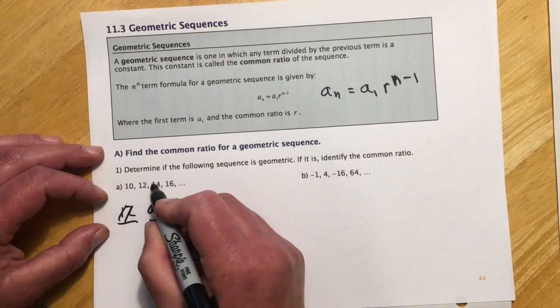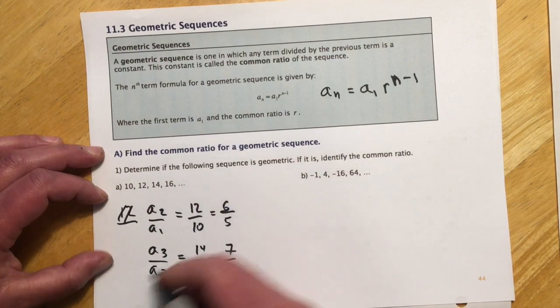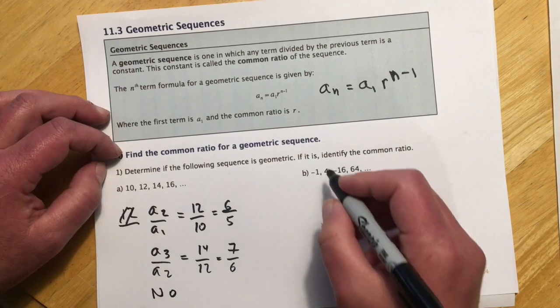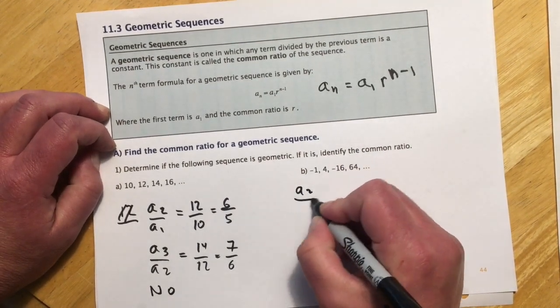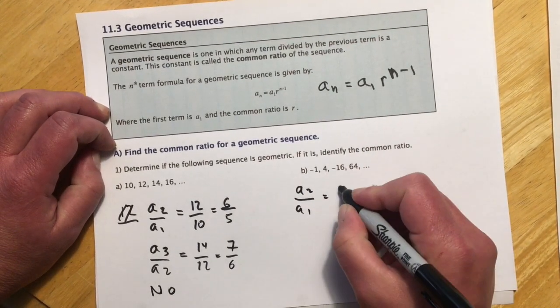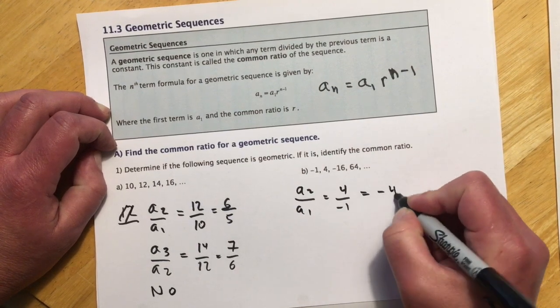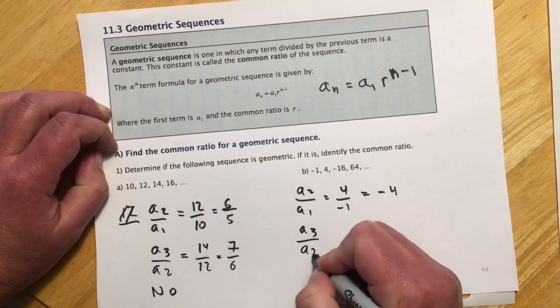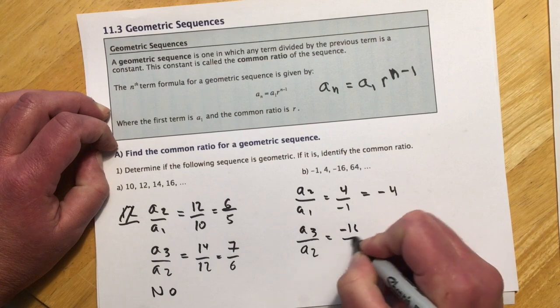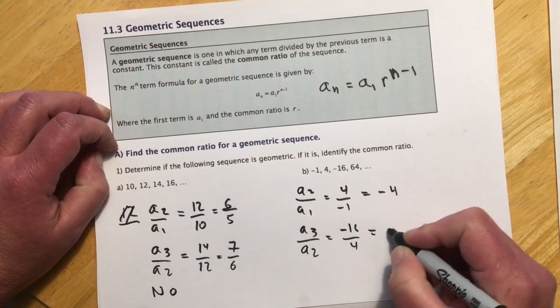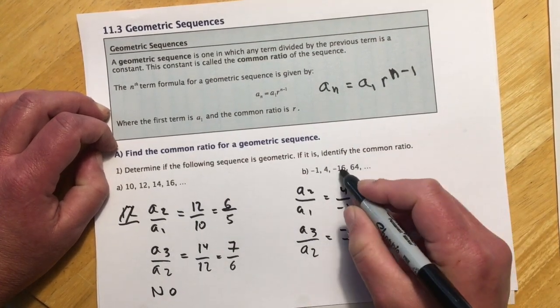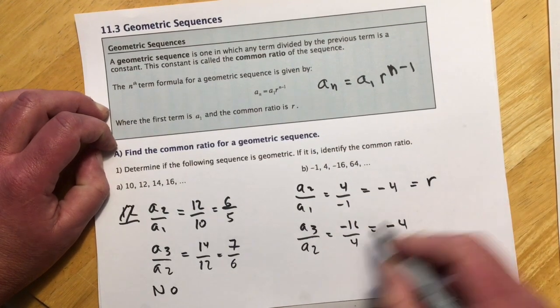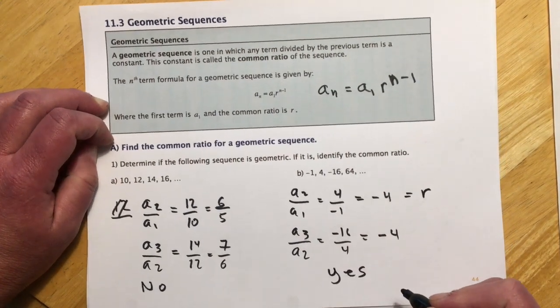Actually, this one has a common difference. It's counting by 2, so it would be arithmetic. But for this section, we would just say no, it's not geometric. So the same thing here. So the second term over the first term is going to give me 4 over negative 1, or negative 4. The third term over the second term is negative 16 over 4. And that's going to be negative 4 again. And you can see 64 divided by negative 16, negative 4. So this is our common ratio r. So here we would say, yes, this one is geometric.